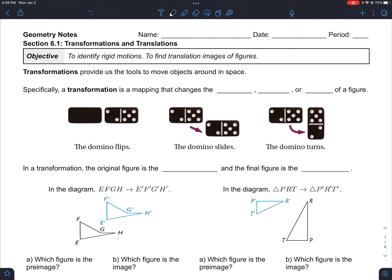Transformations provide us with the tools to move objects around in space. A transformation is the most general, and it's a mapping or a cause and effect that changes the position, the shape, or the size of the figure.